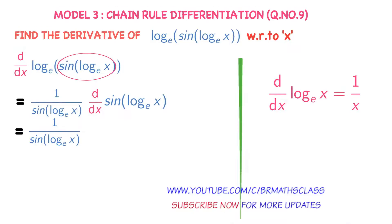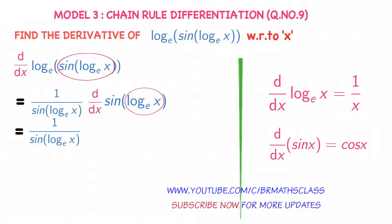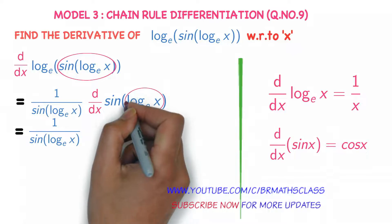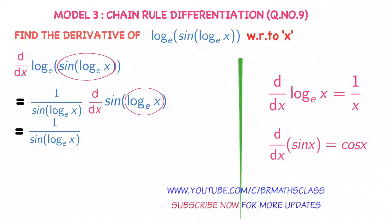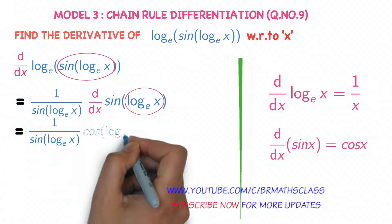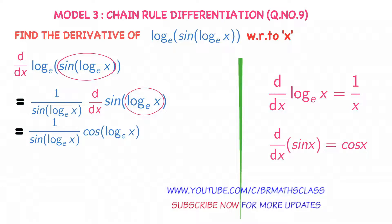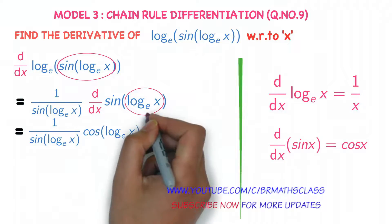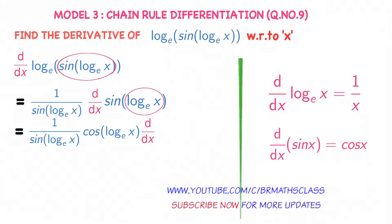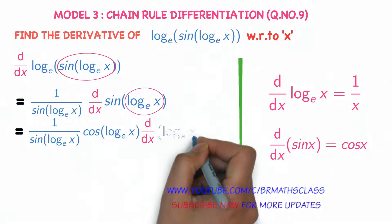But we know the derivative of sin x is cos x. So imagine log x base e as x. If you imagine log x base e as x, it looks like the derivative of sin x. Derivative of sin x is cos x, so the derivative of sin(log x) base e is cos(log x) base e, multiplied by the derivative of log x base e.